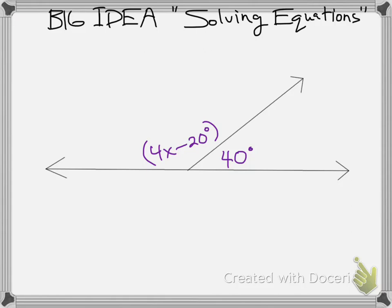As we can see, we've got supplementary angles. This angle plus this angle is going to equal 180. So we're just going to set this problem equal to 180: 4x minus 20 plus 40 has to equal 180.